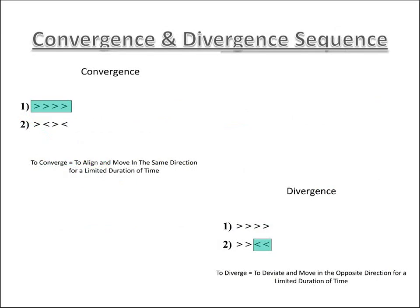Convergence deals with one entity — Facebook, Twitter, whatever — moving in one direction for a limited duration of time, either up or down. Divergence means it's moving in opposite directions for a limited duration of time.